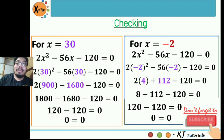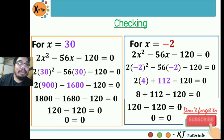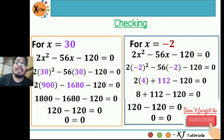For x equal to negative 2, substitute into the original equation: 2x squared minus 56x minus 120 equals 0. That gives 2 times negative 2 squared minus 56 times negative 2 minus 120 equals 0. Negative 2 squared is positive 4, so 2 times 4 is 8. Negative 56 times negative 2 is positive 112. So 8 plus 112 minus 120 equals 0. The sum of 8 and 112 is 120, and 120 minus 120 equals 0. So 0 equals 0 — this is also a solution. Therefore, both solutions are valid.